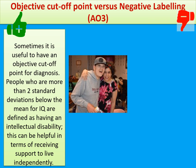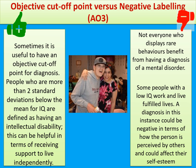The next evaluation point is both a strength and a criticism. Statistical infrequency has an objective cutoff point, which can be useful for diagnosis. For example, people more than two standard deviations below the mean for IQ are defined as having an intellectual disability, and that can be helpful in terms of receiving support to live independently. However, not everyone who displays rare behaviours benefits from a diagnosis of mental disorder. Some people with a low IQ live, work, and have completely fulfilled lives, and a diagnosis in this instance could be negative — affecting how the person is perceived by others and damaging their self-esteem.